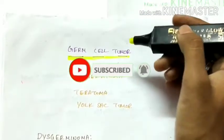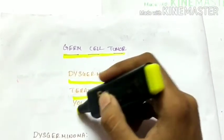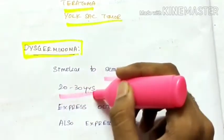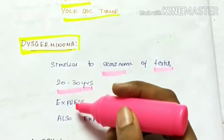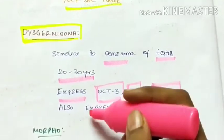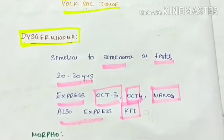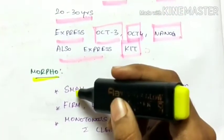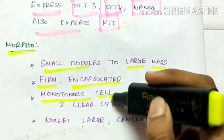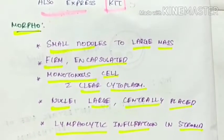Next are the germ cell tumors, which include Dysgerminoma, Teratoma, and the yolk sac tumor. Dysgerminoma is similar to the seminoma of the testis. More commonly occurs in the age group 20 to 30 years in females. This Dysgerminoma expresses OCT3, OCT4, and Nanog genes and it also expresses KIT morphology. It can range from small nodules to a large mass. It is firm and encapsulated, monotonous cells are present with clear cytoplasm, the nuclei are large and centrally placed, and there is lymphocytic infiltration in the stroma.